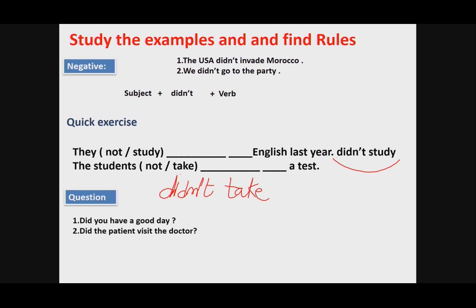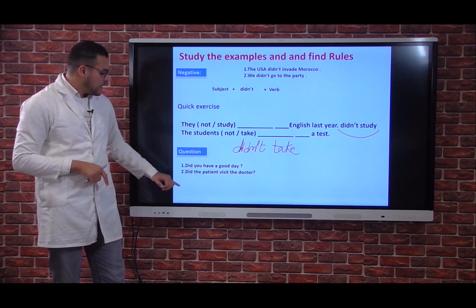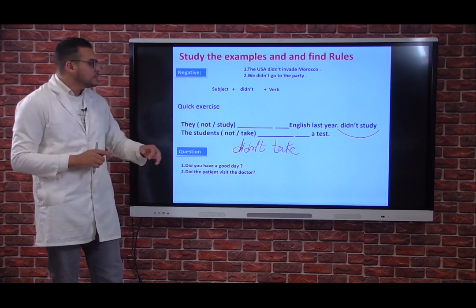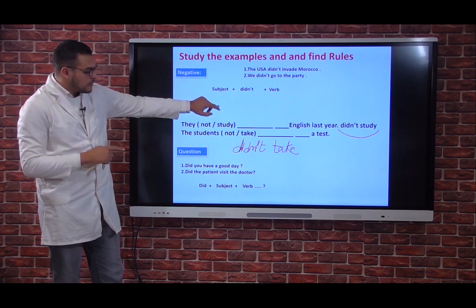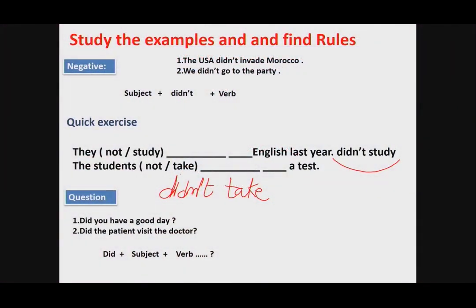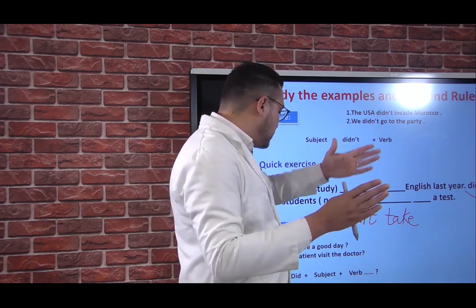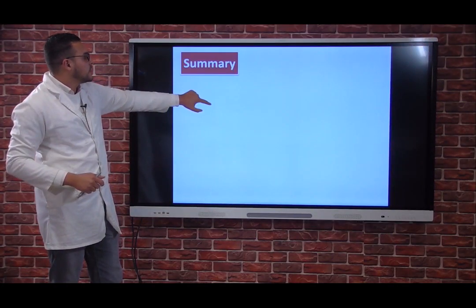So let's use the simple past question form: Did + subject pronoun + verb. And by subject pronoun I mean I, you, he, she, it, etc. The structure for questions is: did + subject pronoun + verb in the infinitive form. Did you have a good day? Did the patient visit the doctor? This applies to all subject pronouns with the auxiliary 'did.'